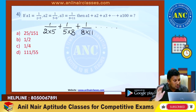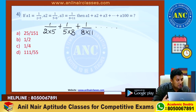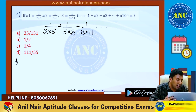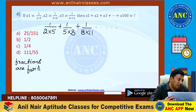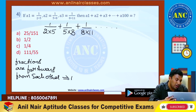We will use approximation. Now 1 by 2 is 50 percentage, 1 by 4 is 25 percentage. Numerator greater than denominator — numerator less than denominator. All the fractions are far away from each other. If the fractions are far away from each other, the best way to solve the question is the approximation technique.